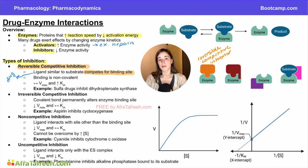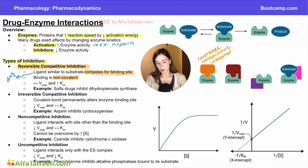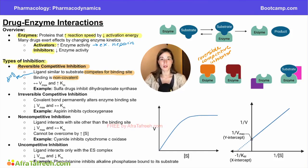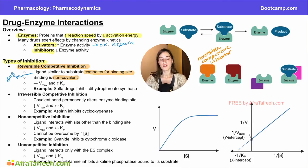Importantly, the binding between a reversible competitive inhibitor and the enzyme is non-covalent, so it doesn't form very strong or permanent bonds. This enzyme-inhibitor complex can bind and then unbind, and once the enzyme is unbound, it can bind either to the inhibitor again or to the substrate, at which point it could do the reaction. So for reversible competitive inhibition, the inhibitor and the substrate are competing for the same active site, and whether the inhibitor or the substrate wins the competition depends on the concentration of both molecules.